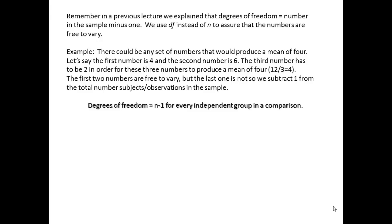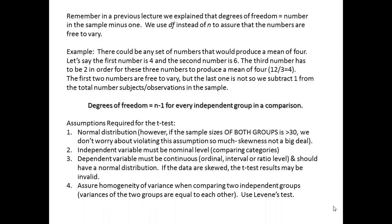The t-test has four assumptions that must be met in order to use it. Assumption one is normal distribution. When you use a parametric test like the t-test, the assumption must be met that the data are normally distributed and not skewed. However, if the sample sizes of both groups being compared is greater than 30, we don't have to worry too much about violating that assumption. The second assumption is that the independent variable must be nominal because we're comparing categories, and the dependent variable must be continuous, ordinal or higher, and should have a normal distribution. If we have a small sample size and the data are skewed, we may get ambiguous test results.